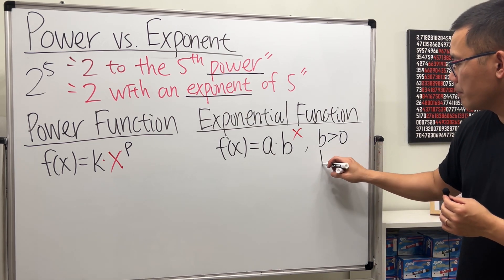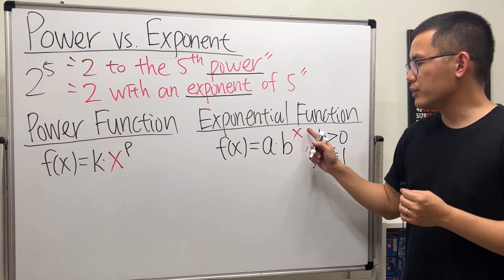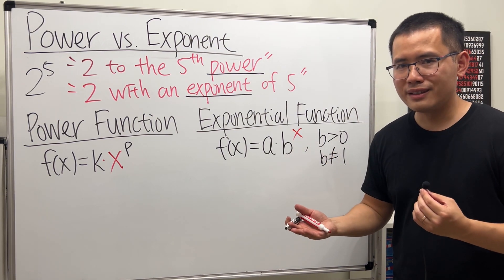And we also don't want b to be 1. Because otherwise, 1 to the x power is just always 1. That's a constant function.